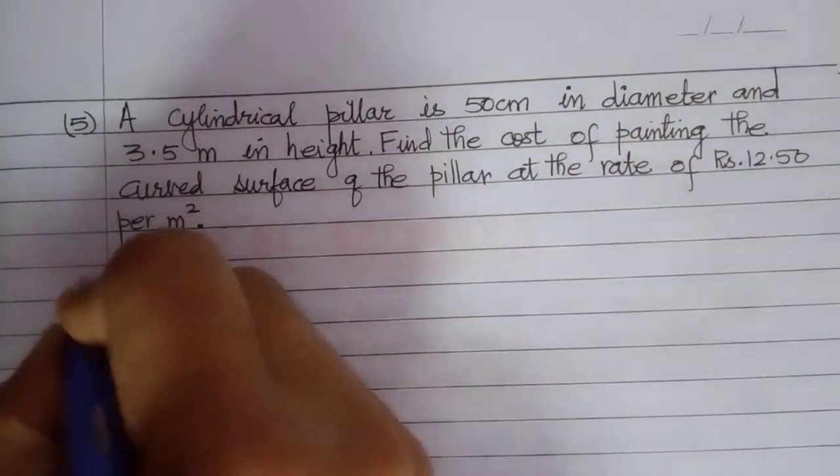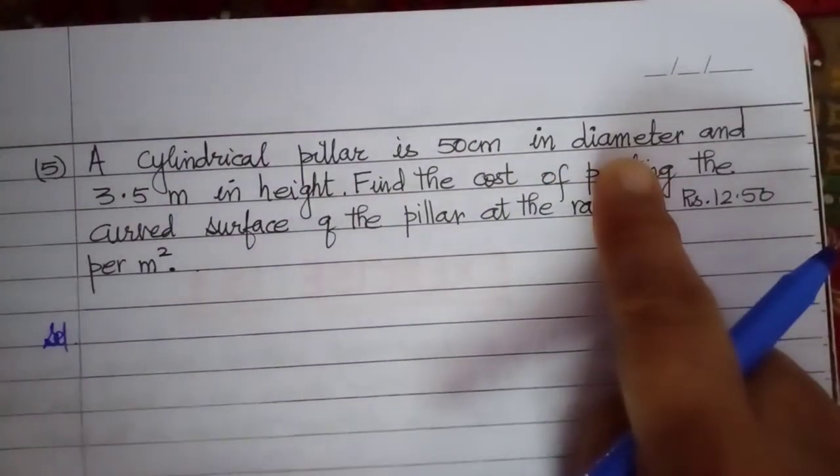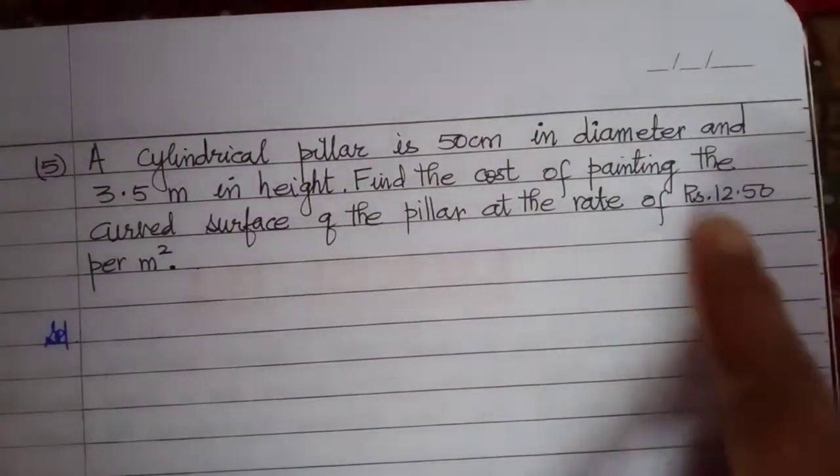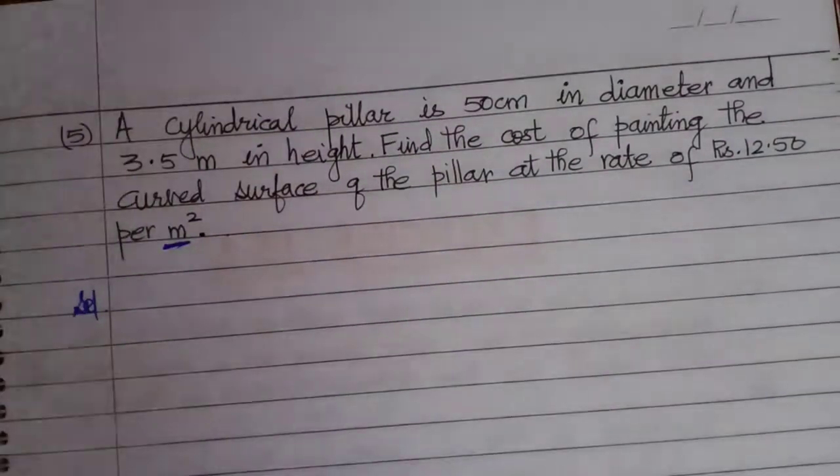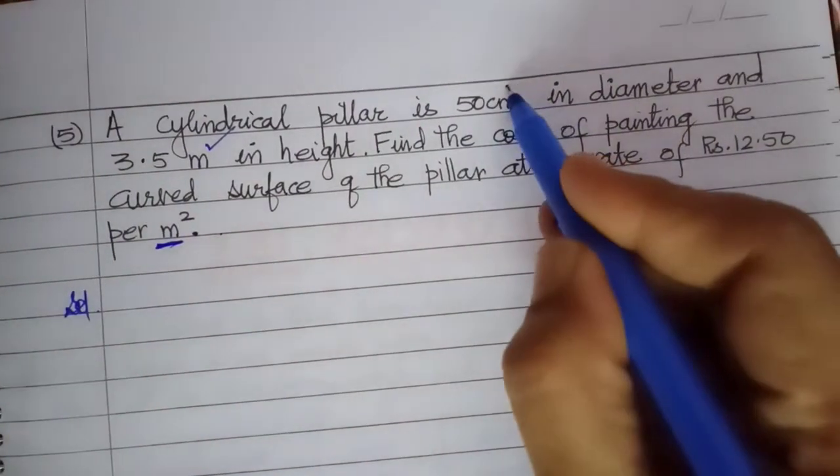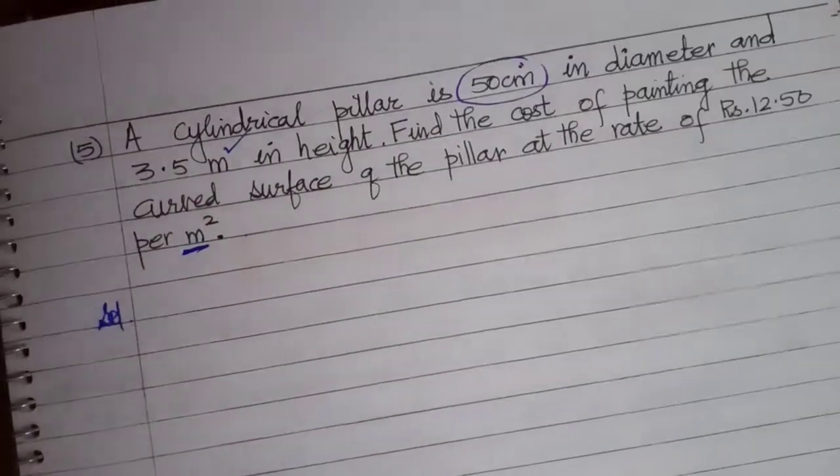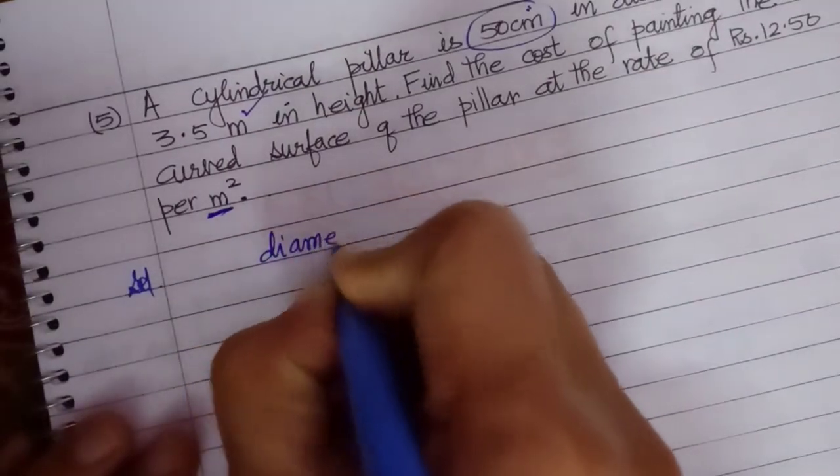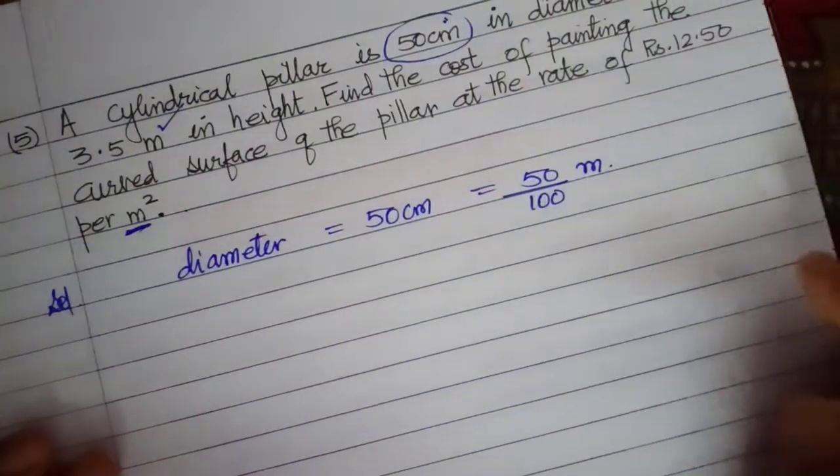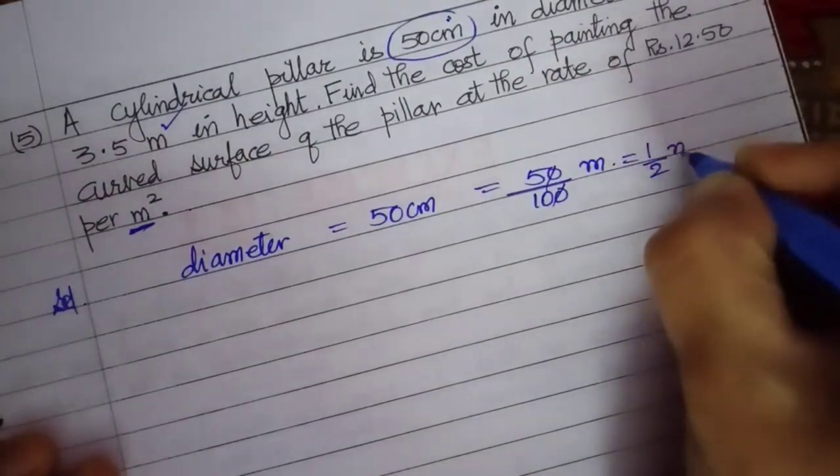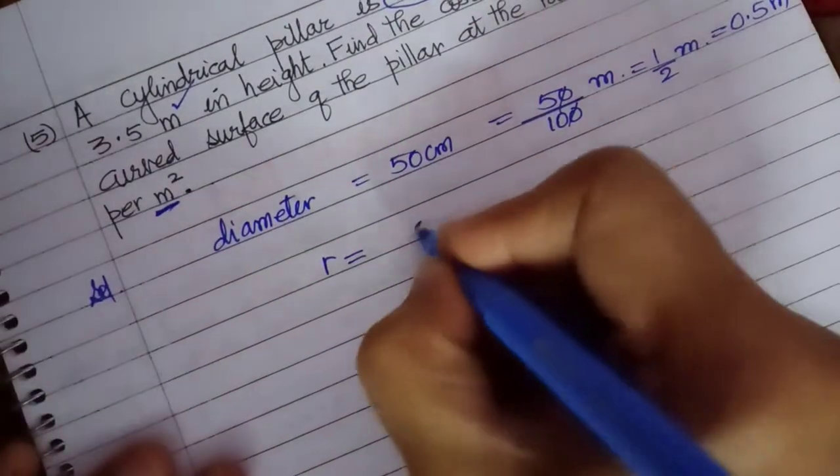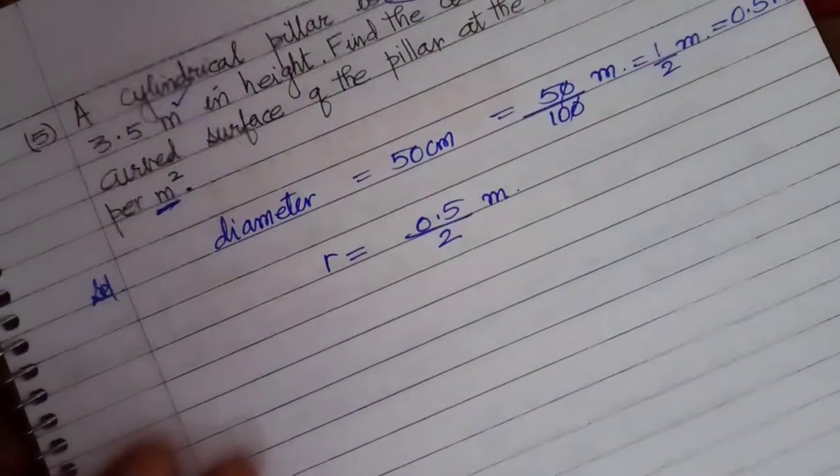Last question, the 5th question of this session. A cylindrical pillar is 50 cm in diameter and 3.5 meter in height. Find the cost of painting only the curved surface area at the rate of 12.50 per meter square. That means we have to change everything to meters. This is already in meters. This part has to be changed to meters. Diameter is 50 cm, 50 by 100 meter. That means 1 by 2 meter. That means 0.5 meter is the diameter. What will be the radius? Half of it.